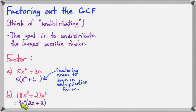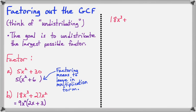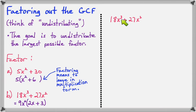If you distribute 9x squared, you can get back to the original problem, and the terms inside the parentheses do not share any factors. Now let's look at that same problem again — but what if you didn't realize that 9 would go into both of these? What if you just thought 3 would do it? And what if you didn't realize you could get x squared, and only thought you could have x?